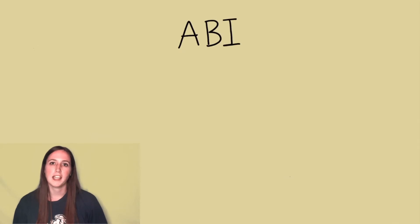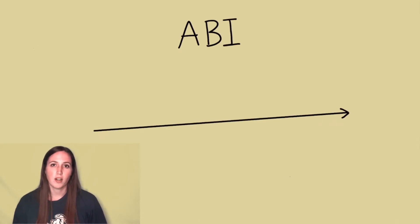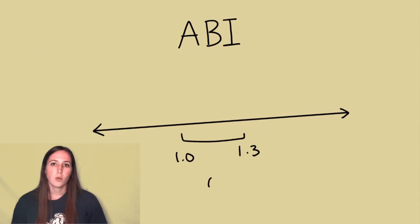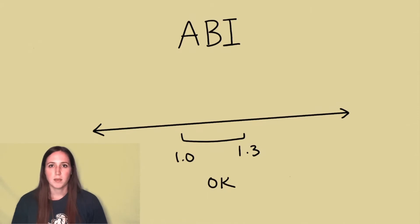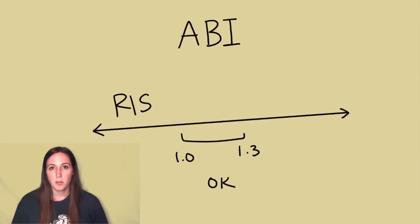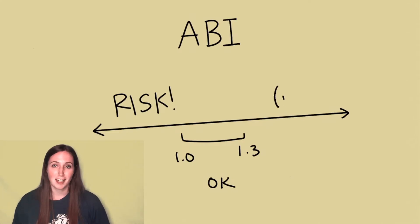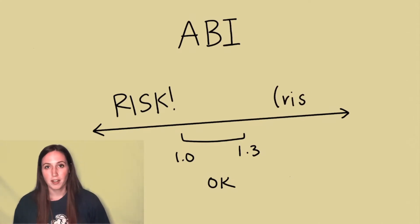ABI, or ankle brachial index, can indicate your patient's risk for developing an arterial wound. Usually 1 to 1.3 is considered normal. Anything lower than 1 puts them at risk for an arterial wound, and the lower the number, the higher the risk. If the patient has an ABI above 1.3, they're also at risk for an arterial wound.